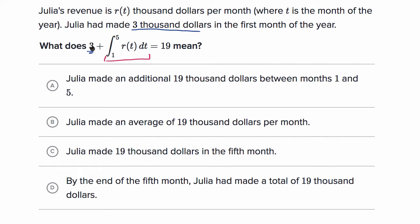And so if you add that to the amount that she made in month one, well that tells you the total she makes from essentially time zero all the way to month five. And they're saying that is equal to 19. So let's see which of these choices are consistent with that.